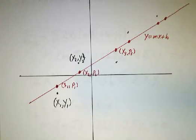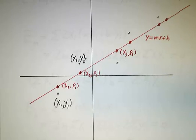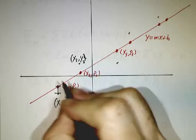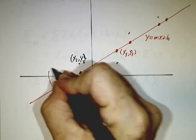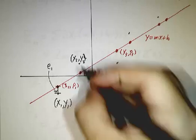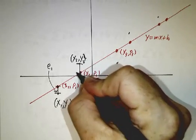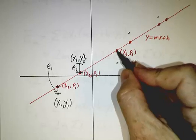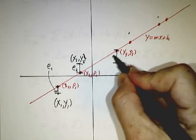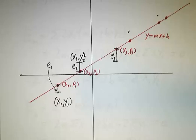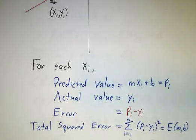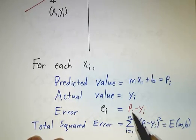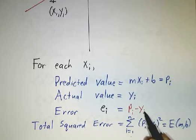And then the error is the amount that it misses by. So this distance here, that's going to be our first error, e1. And our second error is going to be the amount that the second point misses by. And the third error is the amount that the third point misses by. So in general, the error ei is the predicted value minus the actual value.